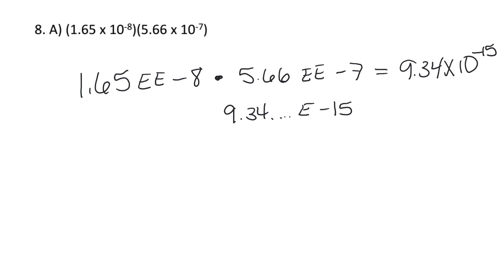That's the reason why it looks a little different. When you put it in the calculator, it's going to be 1.65 — you hit the EE button — but on your screen it's going to come up as E, probably negative eight. That E means exponent, which means times 10.